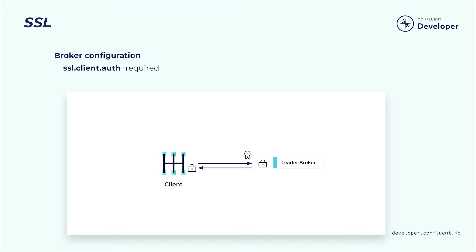Besides the client verifying the broker's identity, the broker will now verify the client's certificate in order to confirm the client's identity. As an aside, you can also set ssl.client.auth equals requested. With this setting, clients with a certificate will be identified using that certificate, while clients that don't have a certificate will be assigned the anonymous user principal.